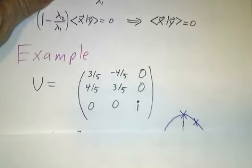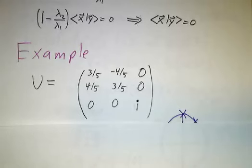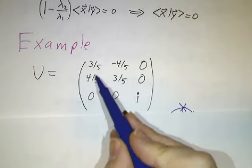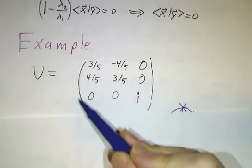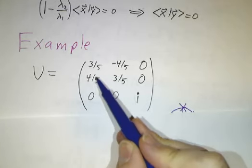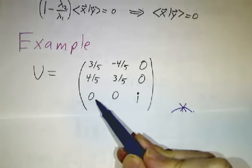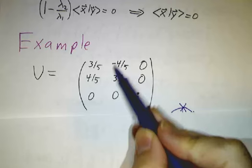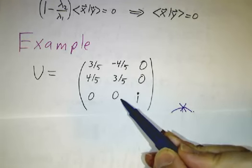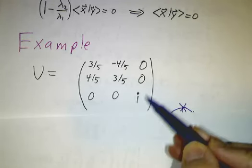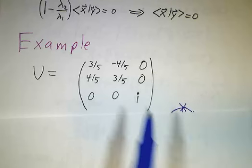So here's an example. Let's look at this matrix. Now you see, the first column is a normal vector because 3 fifths squared plus 4 fifths squared plus 0 squared is 1. The second column is a unit vector and the third column is a unit vector and they're orthogonal.